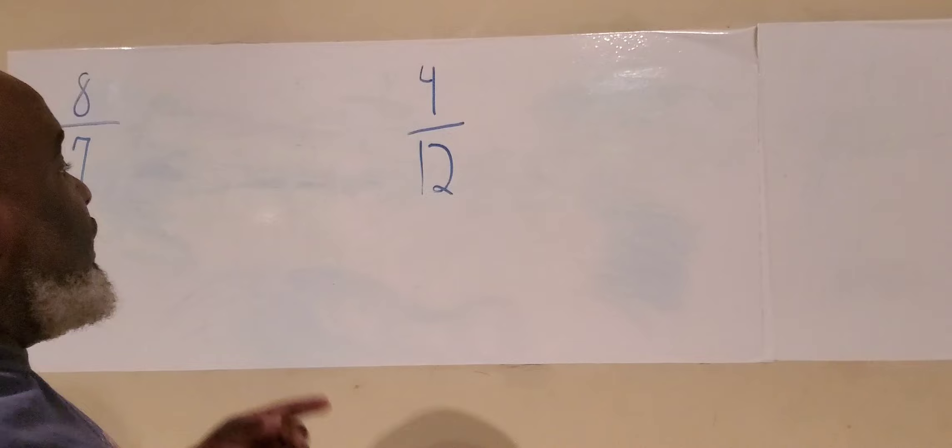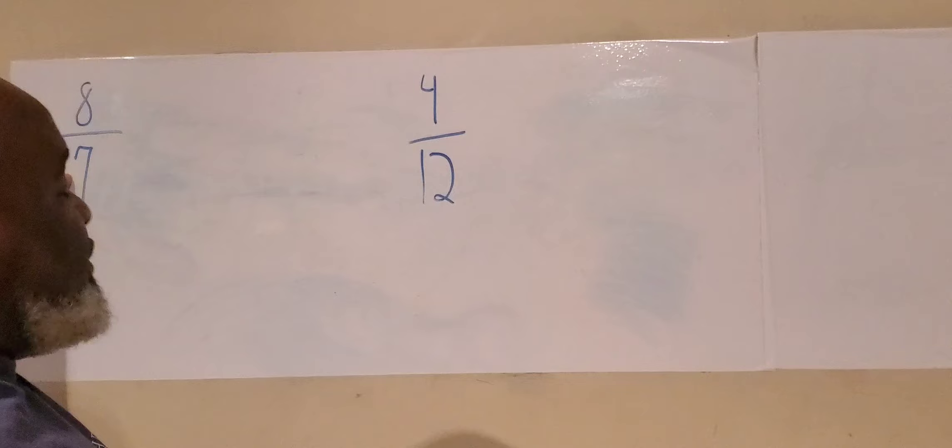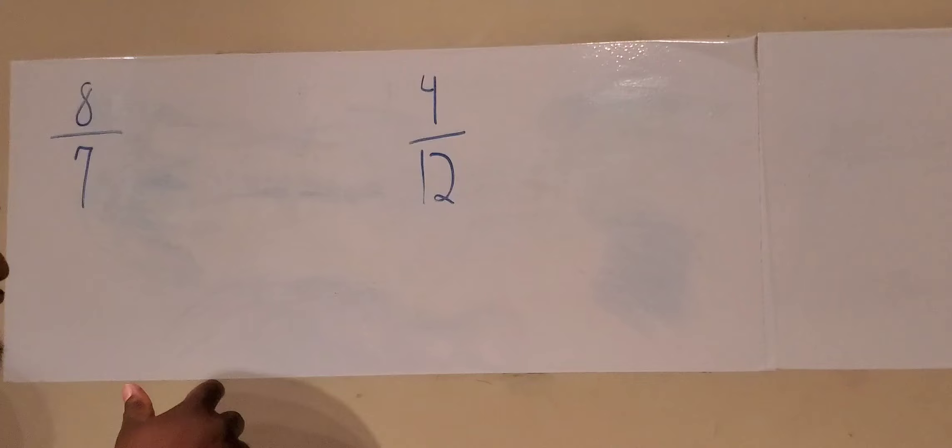Okay, so we're going to start with simplifying fractions. First step is finding factors that are divisible to the numerator and the denominator, factors that can go into. And then the second step is finding the like terms or the like factors once you find them.